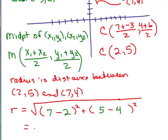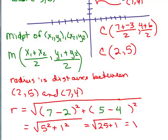So what does this give us? We're going to get 5 squared plus 1 squared, which is 25 plus 1 or square root of 26. So the radius is square root of 26. I've got the center is (2,5) and the radius is √26.